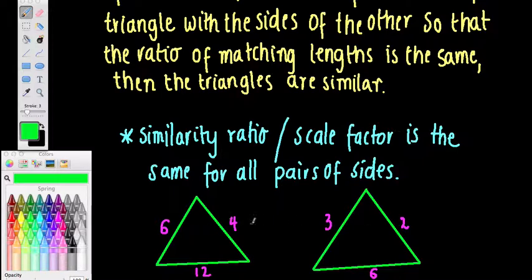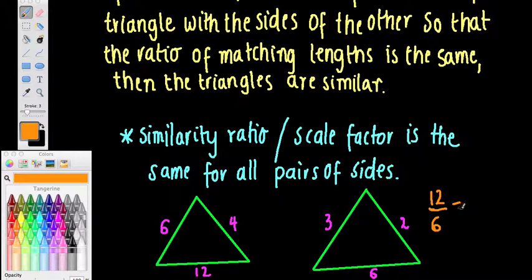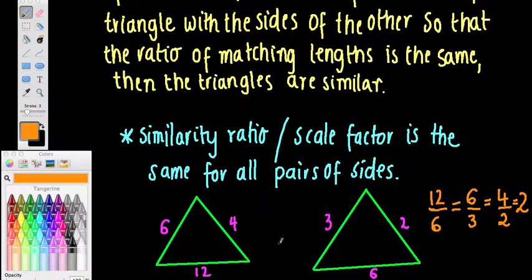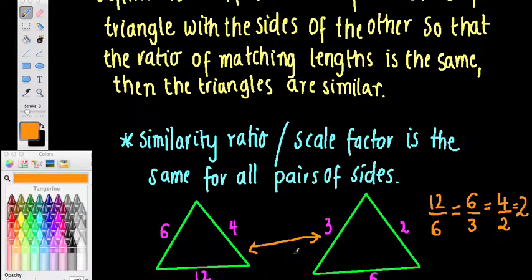Let's look at this diagram. I've got a side length of 3 and 6 on one triangle, 2 and 4 on the other, and 6 and 12 along the bottom. Let's check the scale factor: 12 over 6 should equal 6 over 3, which should equal 4 over 2. Checking: 12/6 = 2, 6/3 = 2, 4/2 = 2. Yes — each pair of corresponding sides gives the same ratio of 2, so these two triangles are similar. That's the Side-Side-Side test.